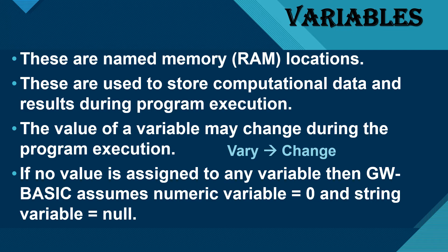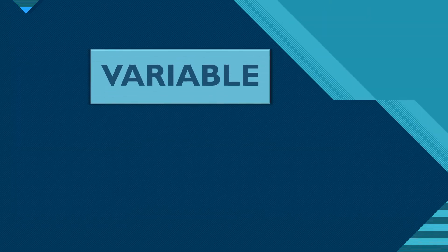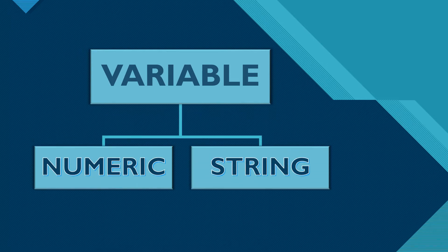Numeric and string are the types of variables which we are going to discuss later. A variable has two types: numeric and string.